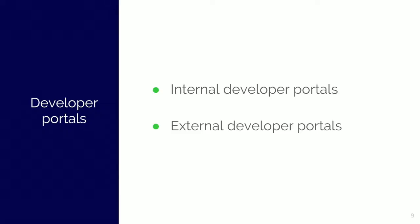We can differentiate various portal types depending on our point of view. We have two groups for discussion: internal portals and external portals. Internal portals are only available to the members of the company who owns the portal. They make the work and life of the developers easier, as in an ideal case they contain all the information about the APIs available within the company.